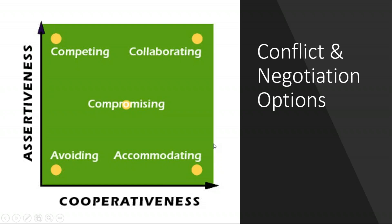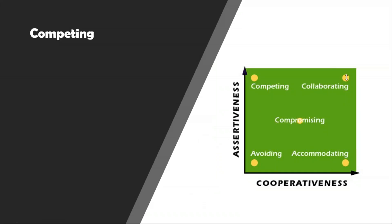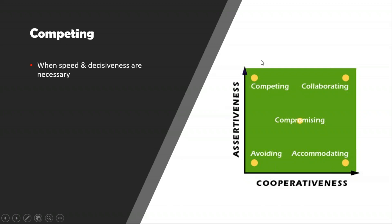By using the full extent of the Thomas Kilmann model, you give yourself a greater opportunity to resolve a conflict situation rather than just using one approach. Let's move on and look at the different uses of each style. Starting with competing: when should you use competing as a preferred conflict resolution and negotiation style? One circumstance is where speed and decisiveness are necessary — where you don't have the luxury of discussion and a decision just has to be made.